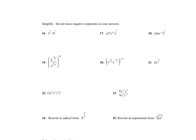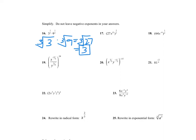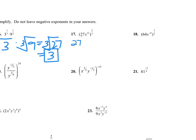These were all from the first quiz. Number 16: take the cube root of 3 times the cube root of 9, which gives us the cube root of 27, which is 3. Number 17: 27 to the 2/3 times x to the 12th raised to the 2/3. When it's a power raised to a power, multiply the exponents. 12 times 2 is 24, divided by 3 is 8. For the 27 to the 2/3: the cube root of 27 is 3, then square it to get 9. The complete answer is 9x to the 8th.